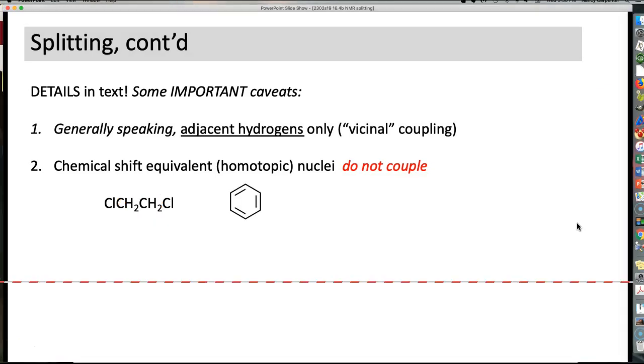Additionally, benzene. Well, honestly, don't we have hydrogens next door to each other in benzene? Of course we do, but they're all chemical shift equivalent. So the NMR spectrum for benzene is a singlet.